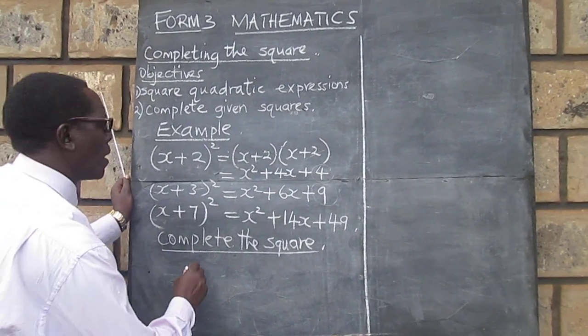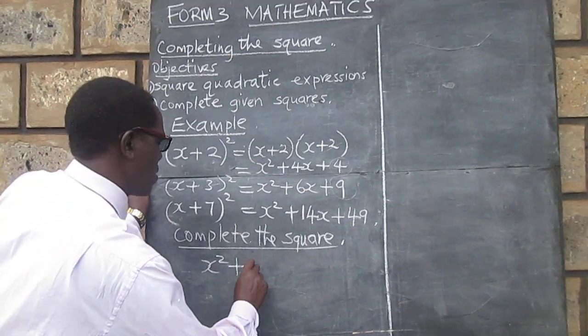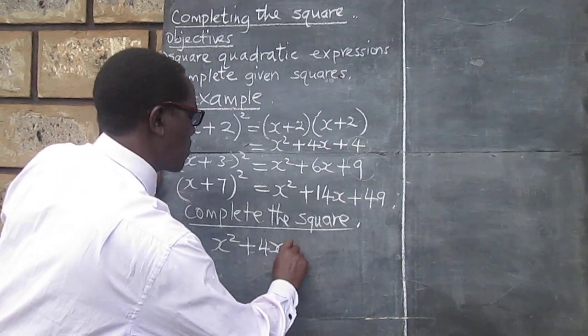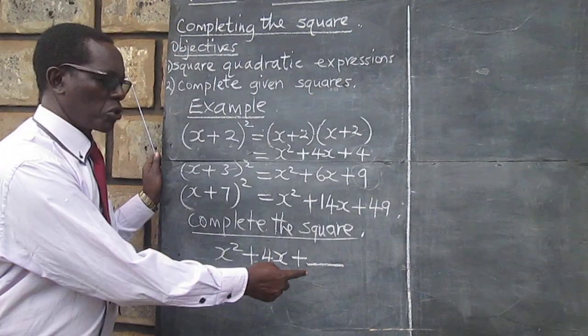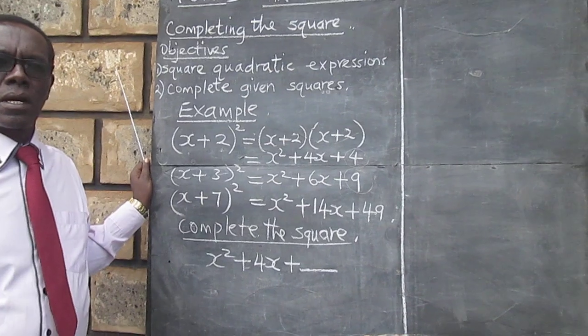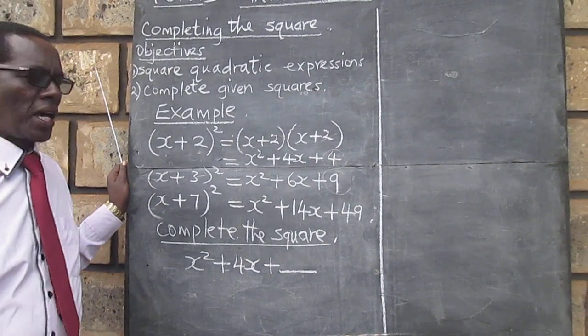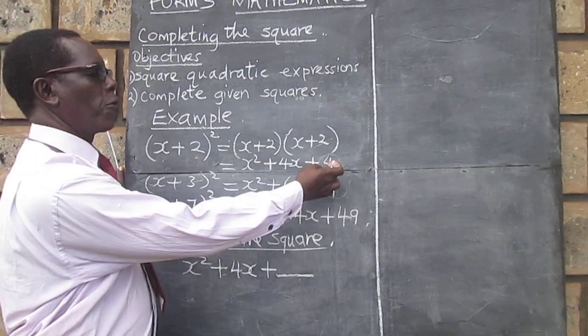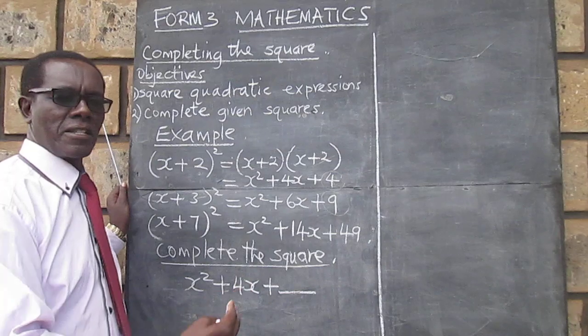So, the first one becomes x squared plus 4x, plus, we do not know what is here. If we are able to look for a way of getting this last part, and get it correct as 4, then we would have known how to complete the square.